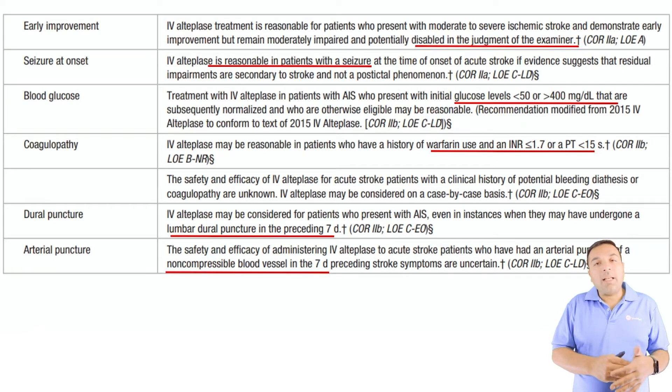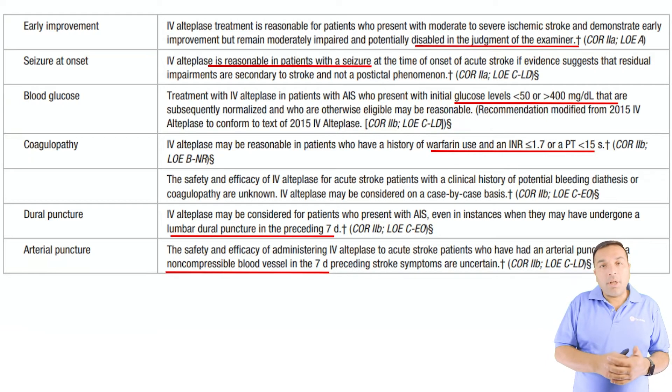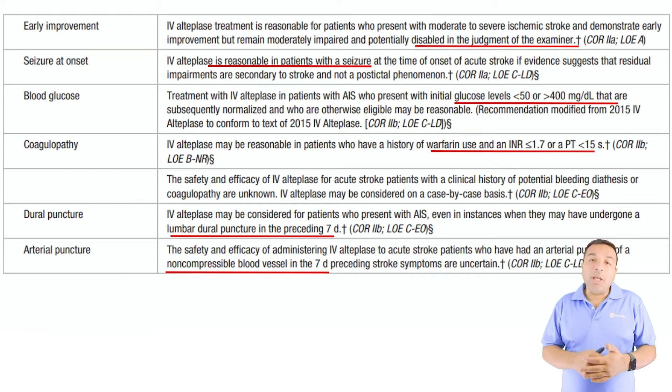Seizure onset is not a contraindication. The class of recommendation is 2a, which is a moderate recommendation to give TPA to patients with seizure onset.